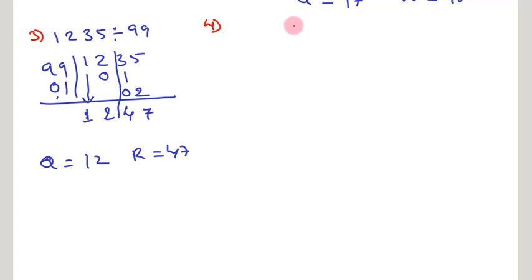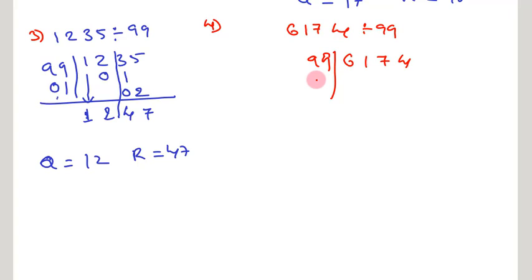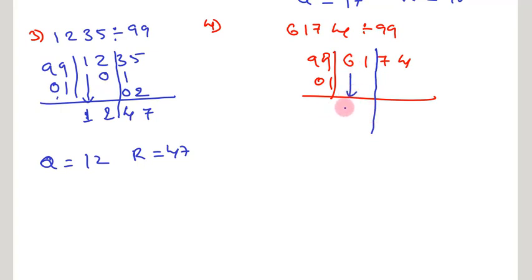Now we are going to discuss the fourth problem: 6174 divided by 99. We arrange the dividend and divisor in this manner, then write down the Nikhilam of 99: 0, 1. Separate our dividend by taking a straight line. Take down the first digit, which is 6. 6 into Nikhilam is 0, 6. Add this 1, then again 1 into 0, 1 gives 0, 1. Adding, you get 5 and 13. So quotient is 61 and remainder is 135.